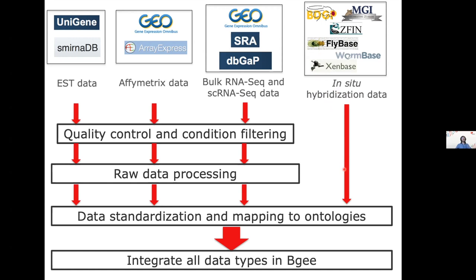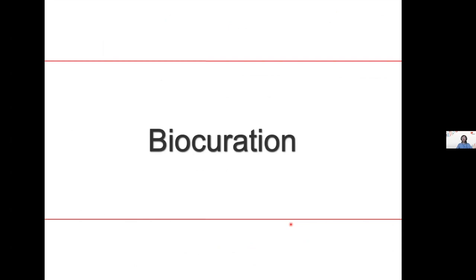We keep only healthy wild-type data and process all of it so that Affymetrix, bulk RNA-seq, and single-cell are processed consistently. We standardize and map these to ontologies, and we integrate all this together in BG. As far as we know, we are the only database where these different sources of gene expression information are integrated together — you don't have to choose between microarray, bulk RNA-seq, single-cell, or in-situ hybridization.